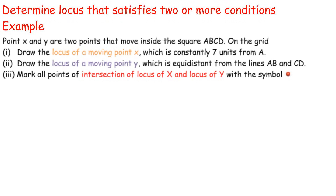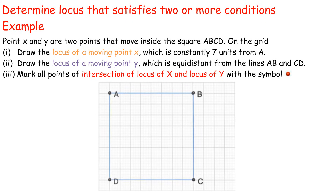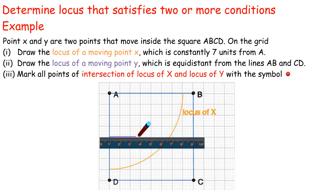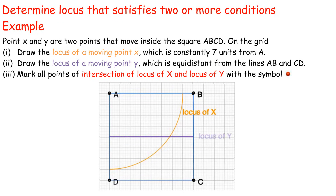Determine the locus that satisfies two or more conditions. Example: points X and Y are two points that move inside the square ABCD on the grid. One: draw the locus of a moving point X which is constantly 7 units from A. Two: draw the locus of a moving point Y which is equidistant from the lines AB and CD. Three: mark all points of intersection of locus of X and locus of Y with a symbol.